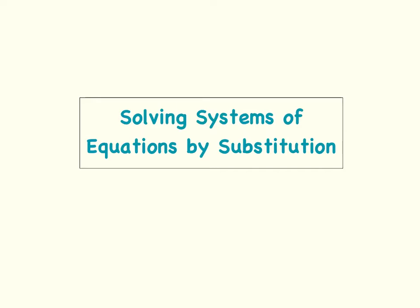If you had an equation with three variables, then you would actually need three equations to solve for each variable. That pattern follows — if you had an equation with five variables, you would actually need five equations to solve for each variable. In this lesson, we will only be solving a system of two equations.